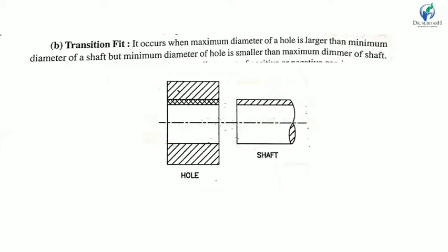Transition fit occurs when the maximum diameter of the hole is larger than the minimum diameter of the shaft, but the minimum diameter of the hole is smaller than the maximum diameter of the shaft. The clearance that occurs between them in this case is called a transition fit.